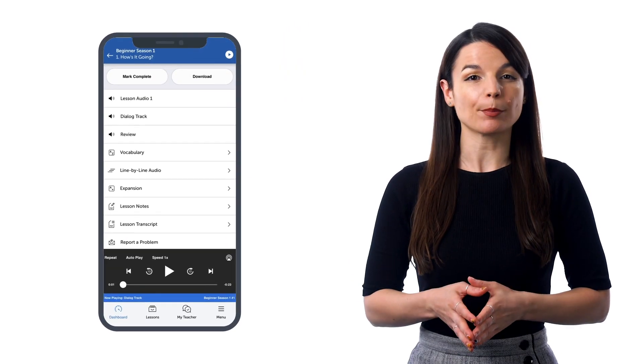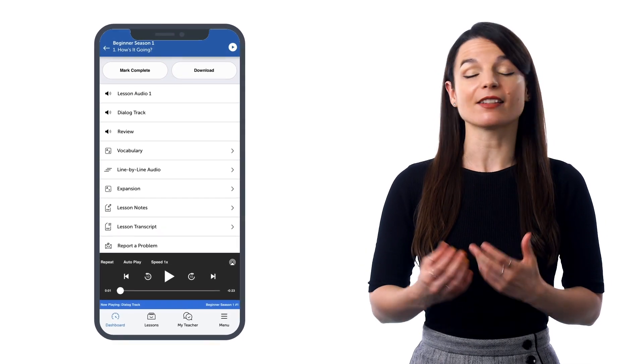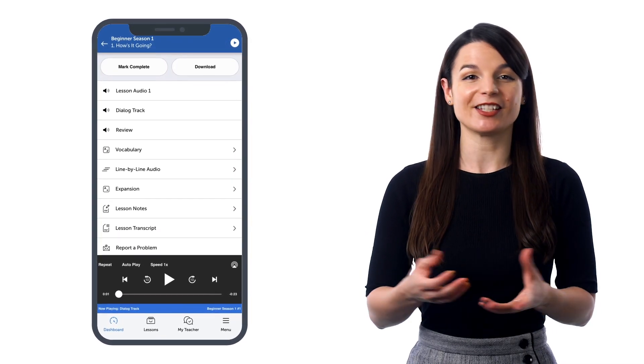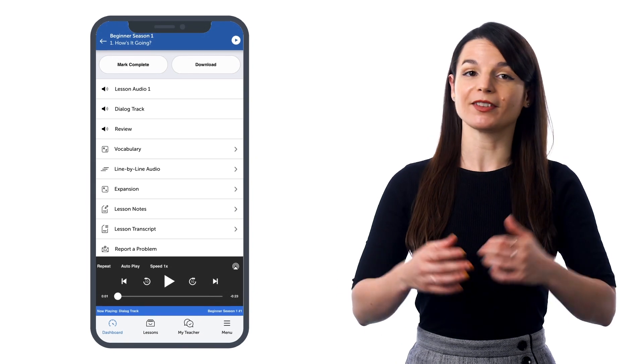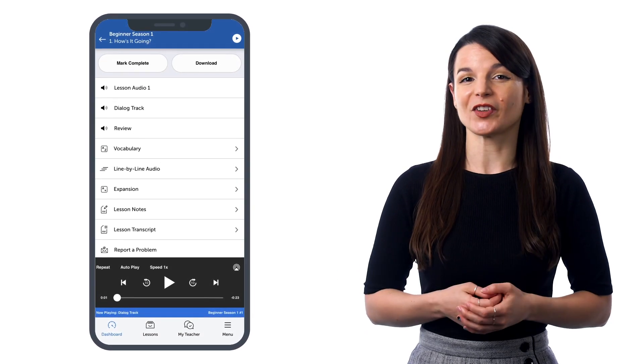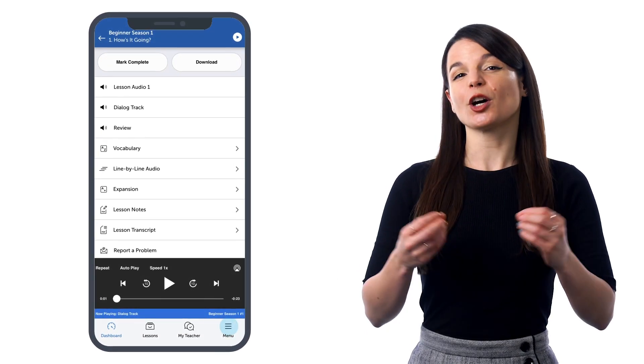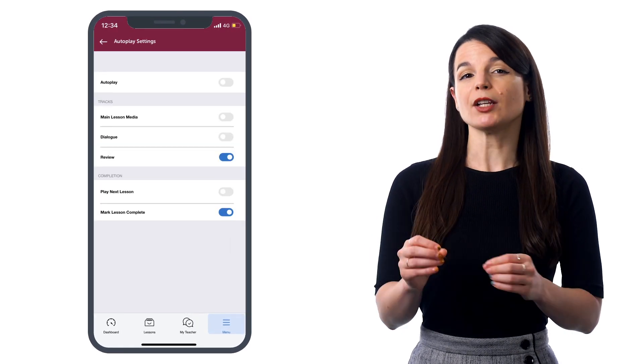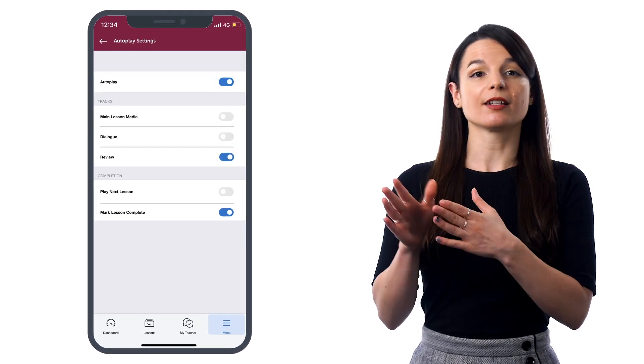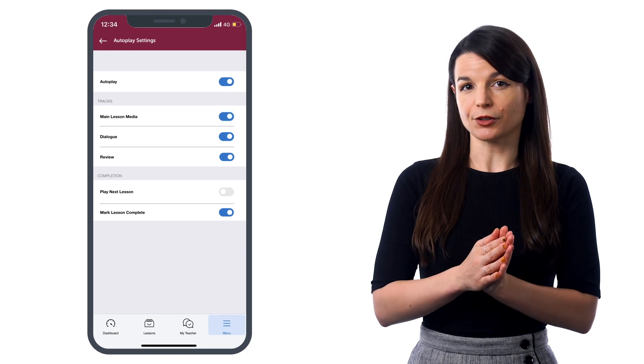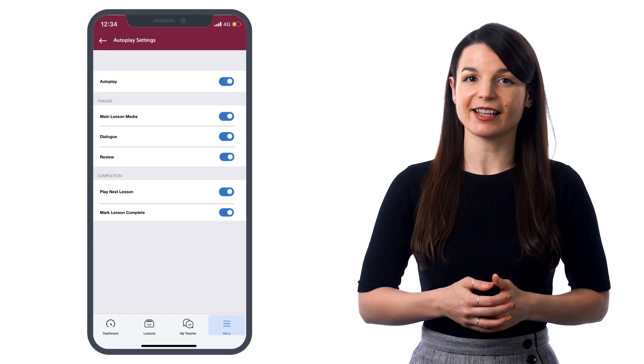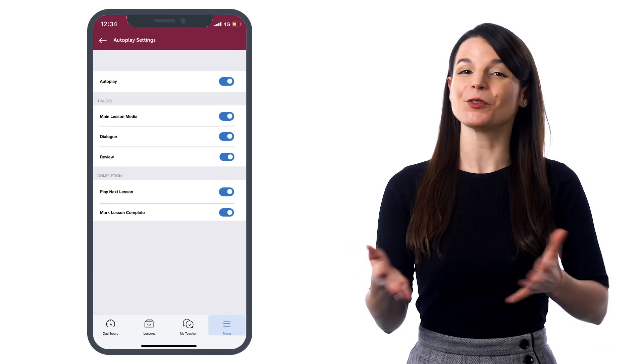The dialogue tracks give you just the conversation of the lessons, no translations, so that you can review the conversations without retaking lessons. And if you're learning with our app, you can just set the dialogue tracks on autoplay and immerse yourself in different types of dialogues, boost your listening skills, and drill all the conversations into your brain. Just go into the settings on the app, and in autoplay, make sure autoplay is on. Turn on dialogue, turn off the other tracks, also set play next lessons to on, and the app will do the rest for you.